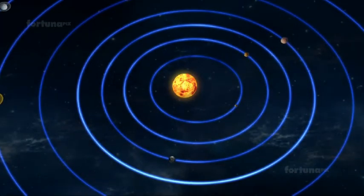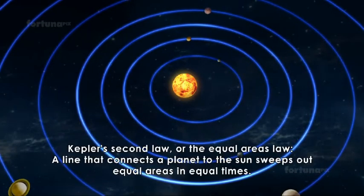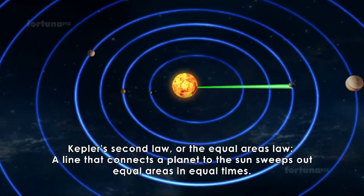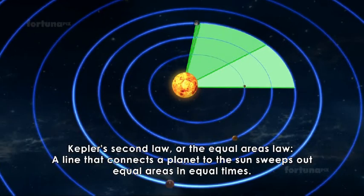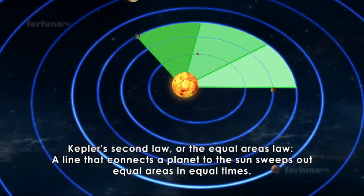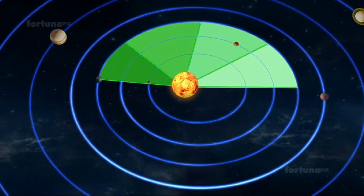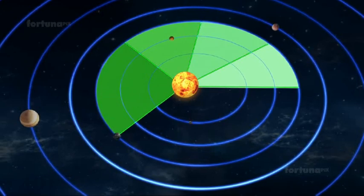Kepler's second law or the equal areas law states that a line that connects a planet to the sun sweeps out equal areas in equal times. When the planet is closer to the sun it moves faster, sweeping through a longer path in a given time.